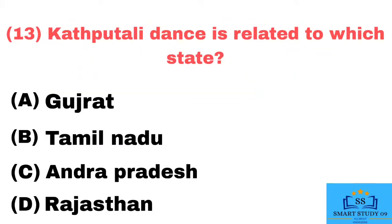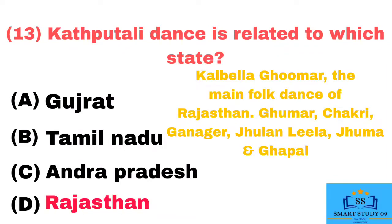Q13. Katputali dance is related to which state? Answer: Rajasthan. Kalbelia and Ghumar are the main folk dances of Rajasthan, along with Chakri, Ganaja, Julan-Lila, Jumar, and Ghaapal.